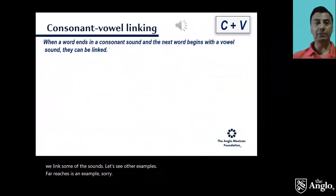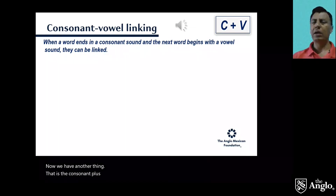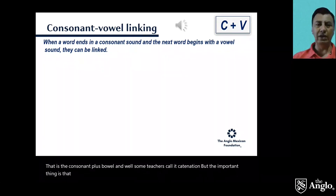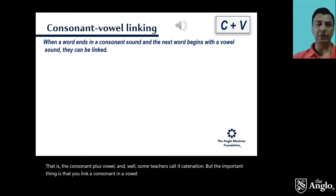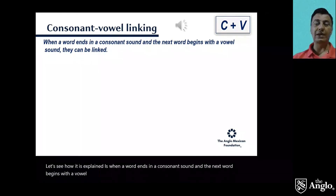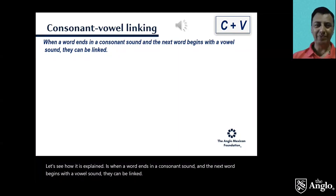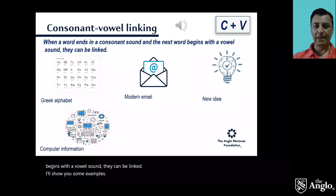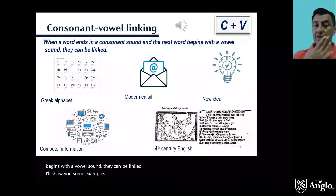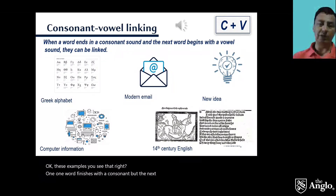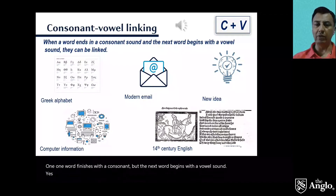Now we have another phenomenon: consonant plus vowel. Some teachers call it catenation. The important thing is that you link a consonant and a vowel. When a word ends in a consonant sound and the next word begins with a vowel sound, they can be linked. Let's see some examples: Greek alphabet, modern email, new idea, computer information, 14th century English. In all these examples, one word finishes with a consonant but the next word begins with a vowel sound.